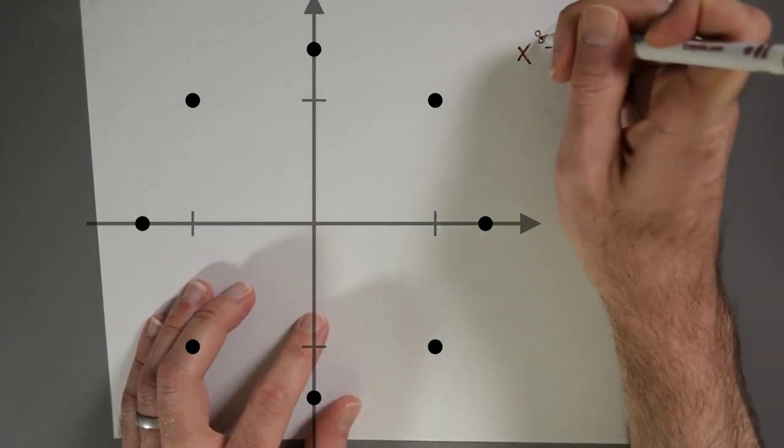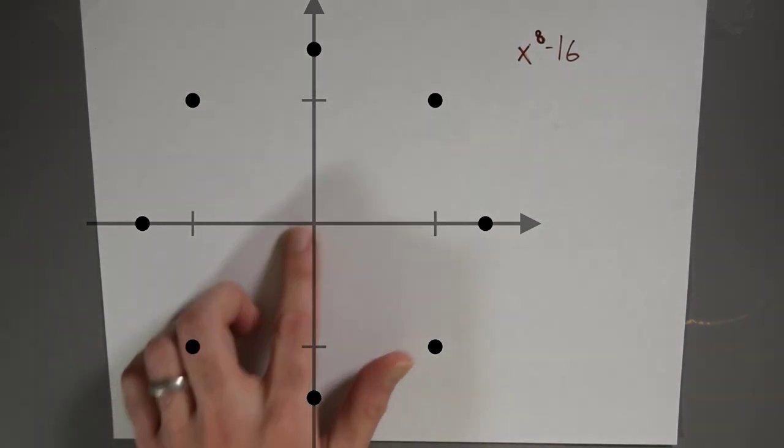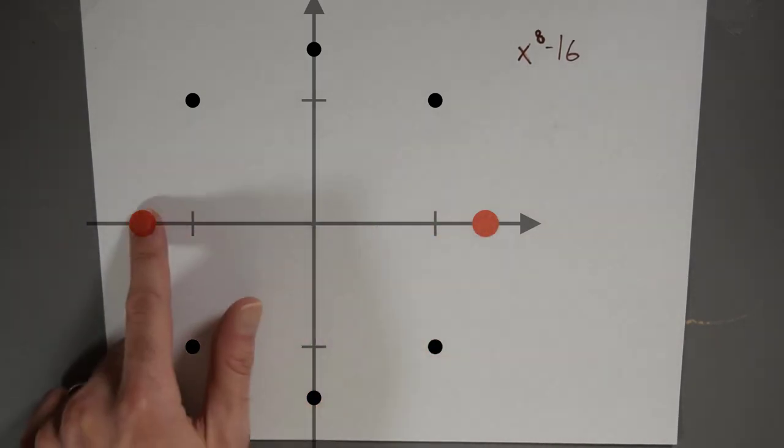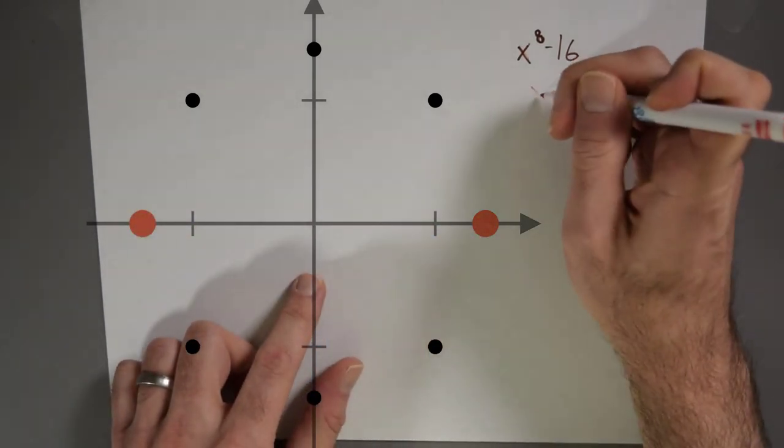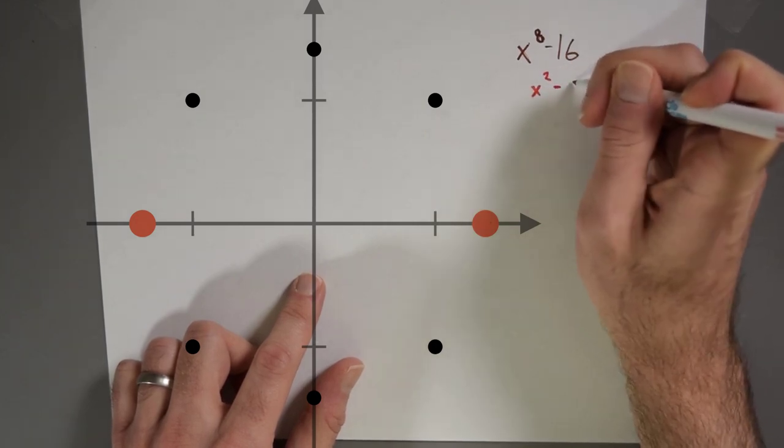This is the polynomial that I would like to factor. So here in red, I've highlighted the two real roots. That gives me a term x squared minus 2.